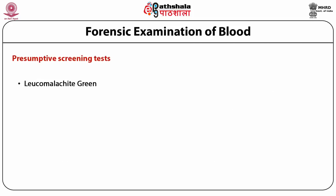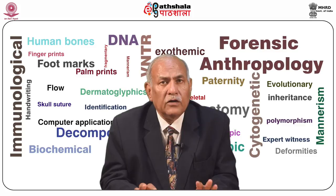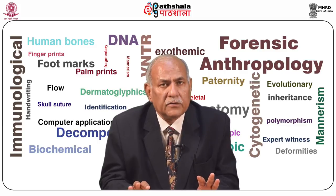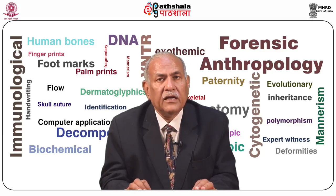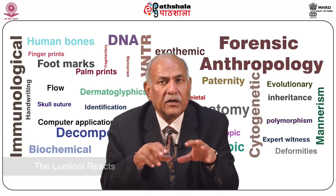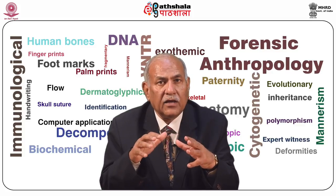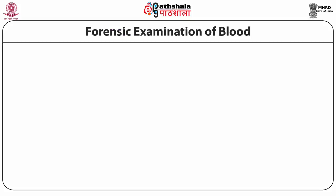The third presumptive test is leucomalachite green, which is similar to the Kastle-Meyer test but replaces phenolphthalein with leucomalachite green. When added to the substance, a green color will be produced if blood is present. The fourth is the luminol test: luminol is used in solution or sprayed onto suspected surfaces, giving a strong blue fluorescence when viewed with ultraviolet light. Luminol reacts with hematin, a substance formed as blood stains age, and produces luminescence best observed in the dark.